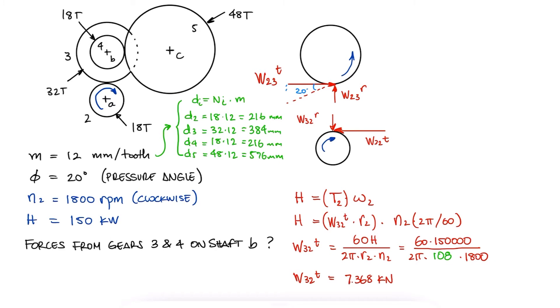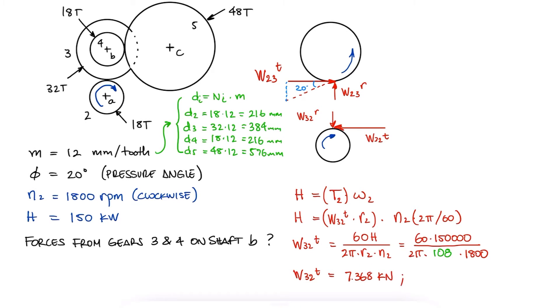With a pressure angle of 20 degrees, the radial component would be the tangential component times tangent of 20. If gear 4 is rotating in the same direction with gear 3, since they're on the same shaft B, gear 5 is rotating clockwise because of the interaction force between gears 4 and 5. From action-reaction and the pressure angle, we can locate the other force vectors.